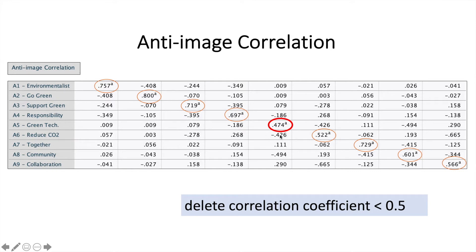In our case here, for A5, the value is 0.47, which is less than 0.5. Therefore, we need to delete this item.